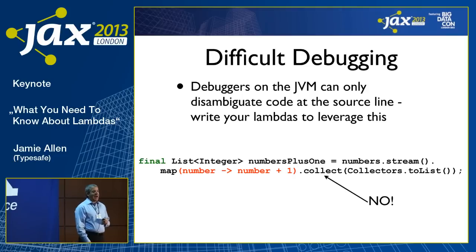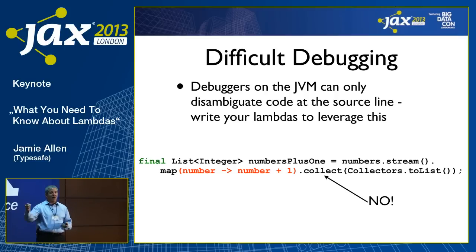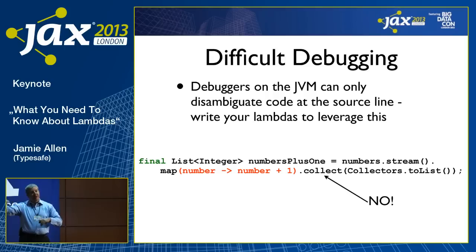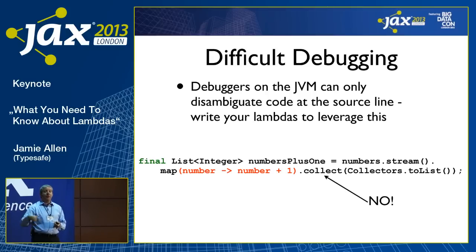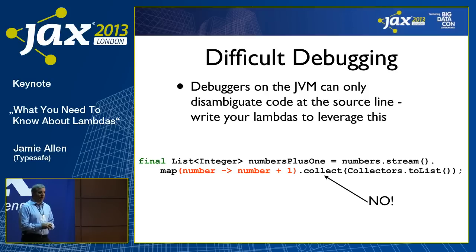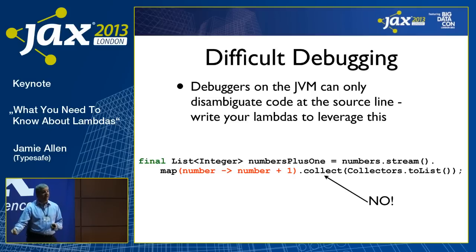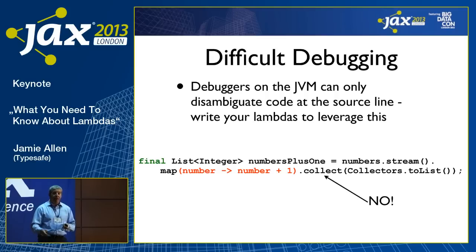Debugging. We have only line-number fidelity. Whenever we're used to using IDE tools for putting breakpoints on code, you're typically going to find yourself writing lambdas that just say numbers.map, here's my function — but that's all on one line. Now you put a breakpoint there, and you want to iterate through the transformations taking place on the collection, and you may not be able to. This is a tooling problem. At TypeSafe with our Scala IDE and also the IntelliJ Scala IDE, you can put a breakpoint and they've figured out how to fix this — but know that when you're using a debugger, it's a bit of a wild card.